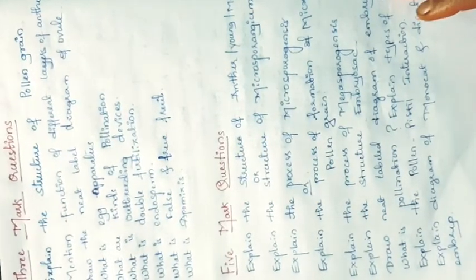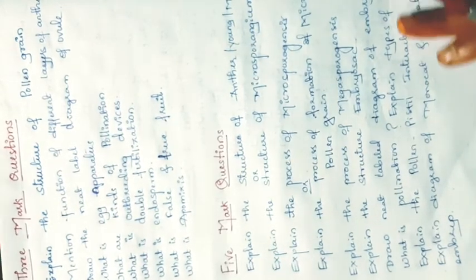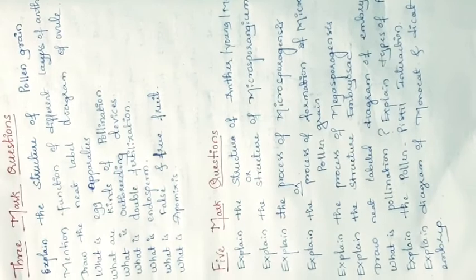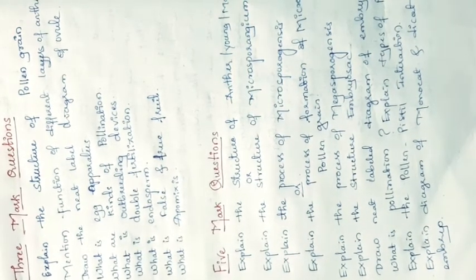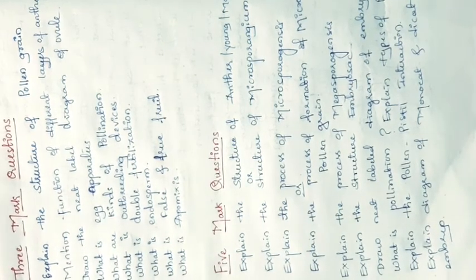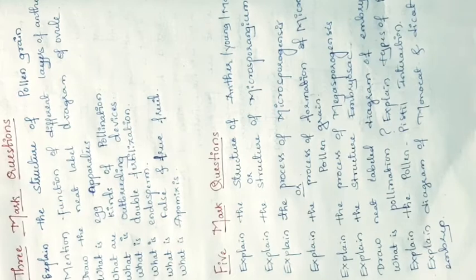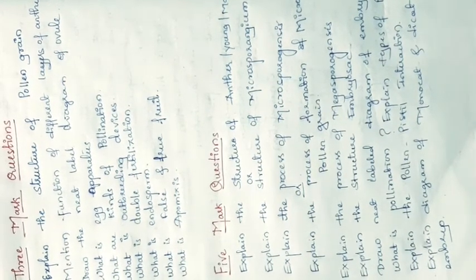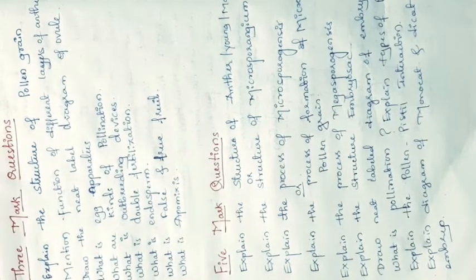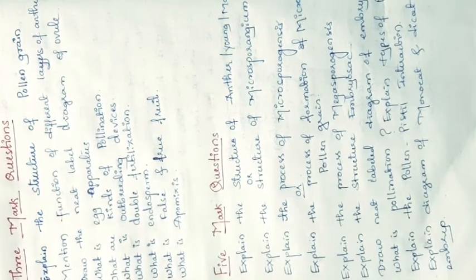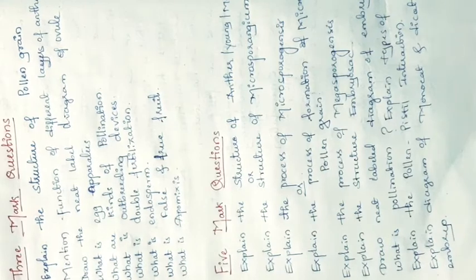Next question: mention the functions of the different layers of the anther — this may also be asked as functions of layers of microsporangium, as microsporangium and anther are the same. The anther mainly has four layers: the outermost is the epidermis, next is the endothecium, then two to three middle layers, and the innermost is the tapetum. Epidermis provides protection; endothecium helps in dehiscence of the anther; middle layers are also for protection; tapetum nourishes the developing microspores.